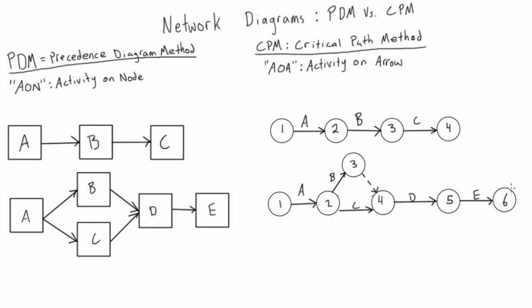When drawing CPM network diagrams, one of the rules is to minimize the use of dummies. In harder, more complex examples you might draw your diagram and then look at it and realize you can reduce the number of dummies and draw it more efficiently. So one of the goals is to use the least number of dummies possible, and also to minimize unnecessary crossovers — for whoever is using the diagram, you want the least amount of arrows crossing over each other.